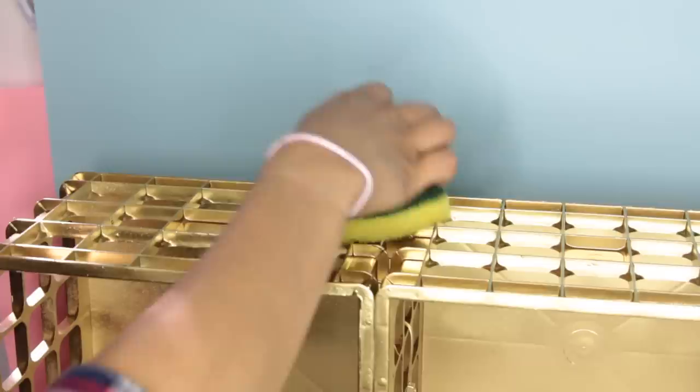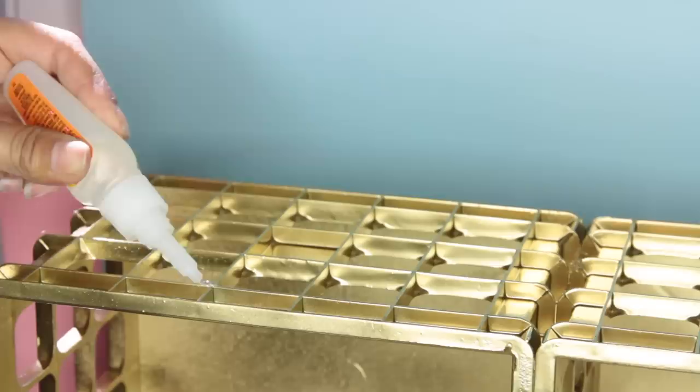Then I use the glue and I just apply the glue to the first two lines, if that makes sense, in the crate, and then the back two lines that you see. I do that to every single crate, and then I place down the picture frames.